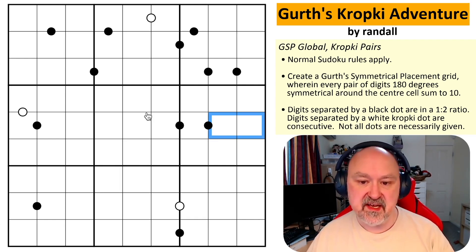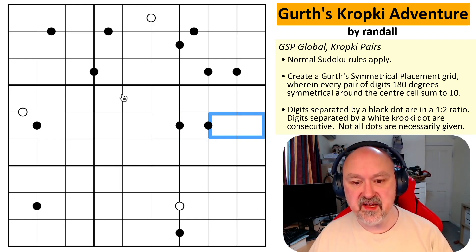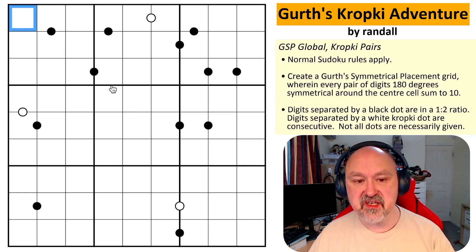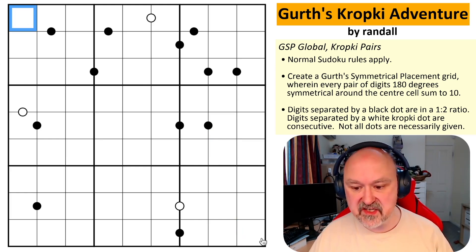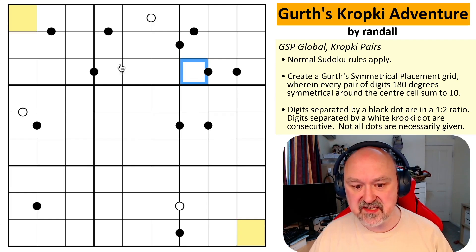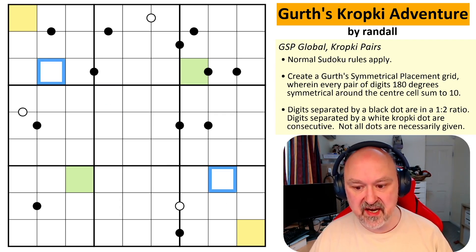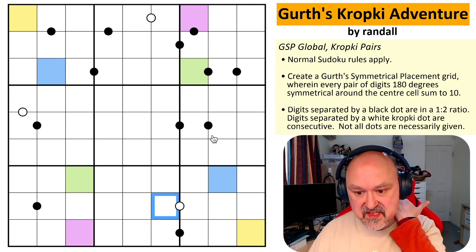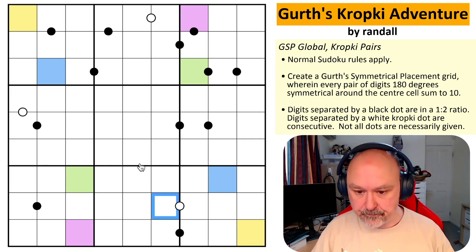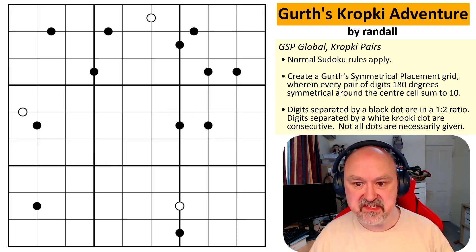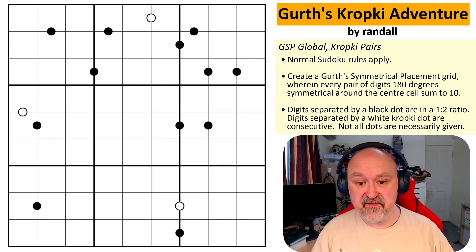What we now have is Girth's symmetrical placement as a constraint. This is the phenomenon where a digit that is 180 degrees opposite on the grid — if you add those two digits together, they sum to 10. So if you grab that digit and its 180-degree rotational partner, they would sum to 10. All those different colored pairs, when you rotate the grid 180 degrees, will sum to 10. Using that as a constraint is not something I've seen before, so I'm looking forward to this one.